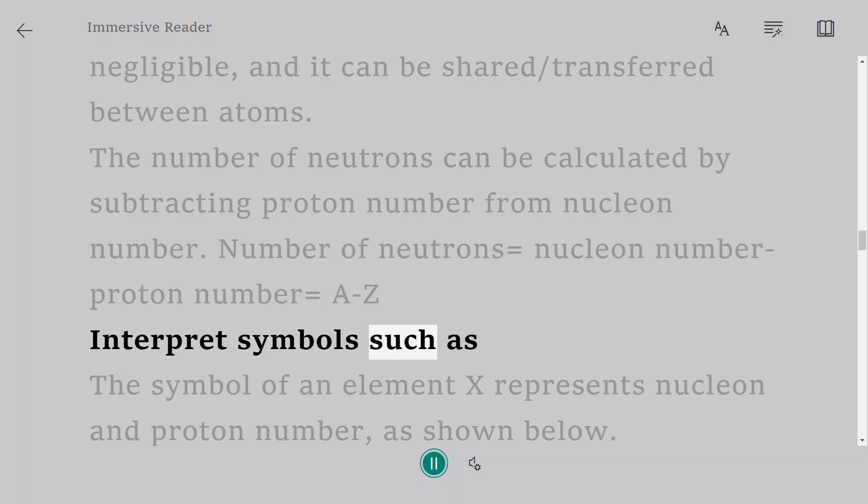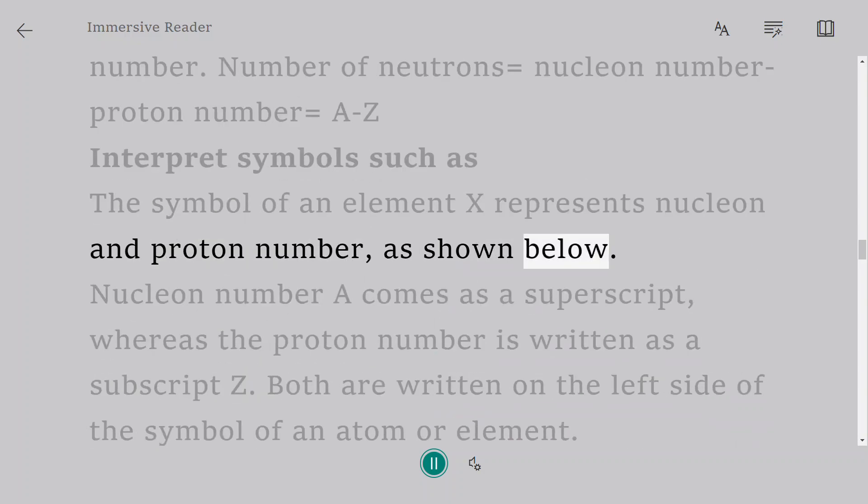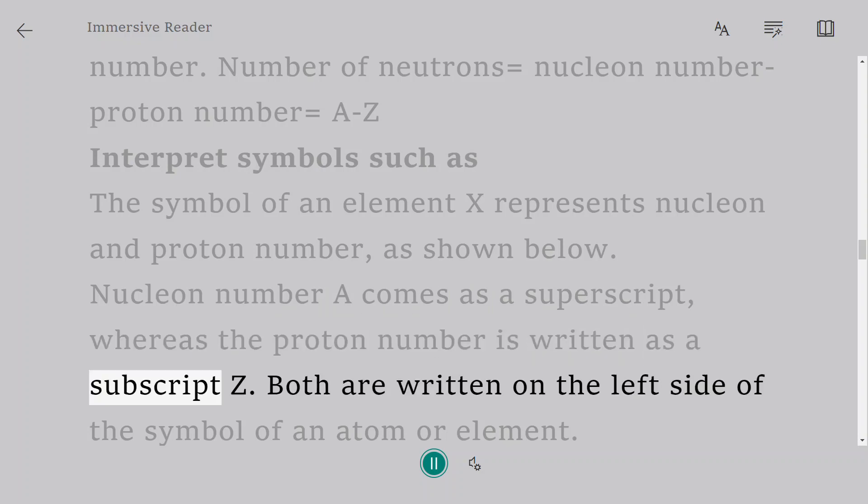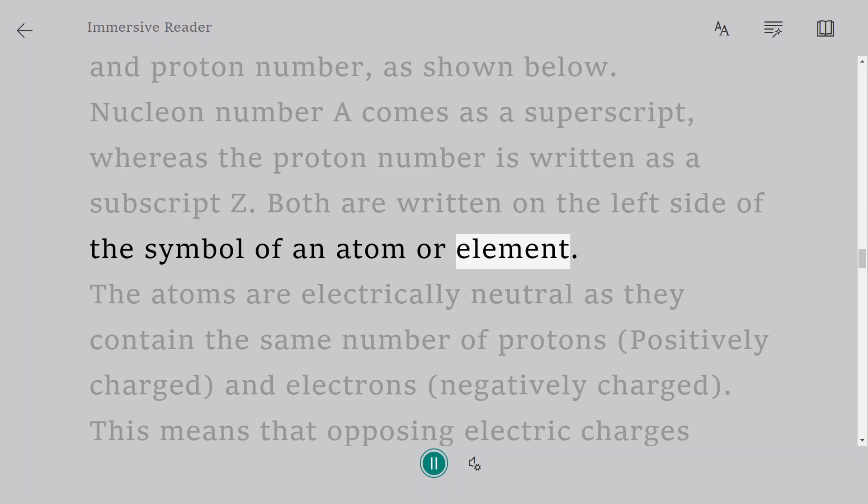Interpret symbols such as: The symbol of an element X represents nucleon and proton number, as shown below. Nucleon number A comes as a superscript, whereas the proton number is written as a subscript Z. Both are written on the left side of the symbol of an atom or element.